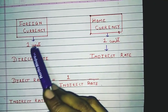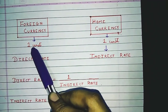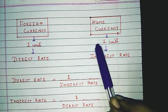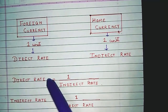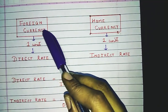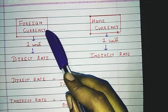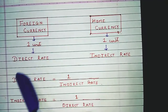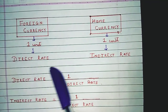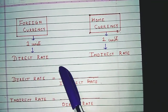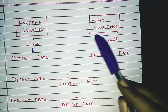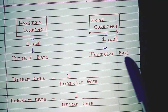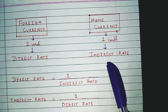In the previous session, we already studied foreign currency and home currency. Whenever we are expressing the foreign currency in one unit, that is called the direct rate. And whenever we are expressing home currency in one unit, that is called the indirect rate.